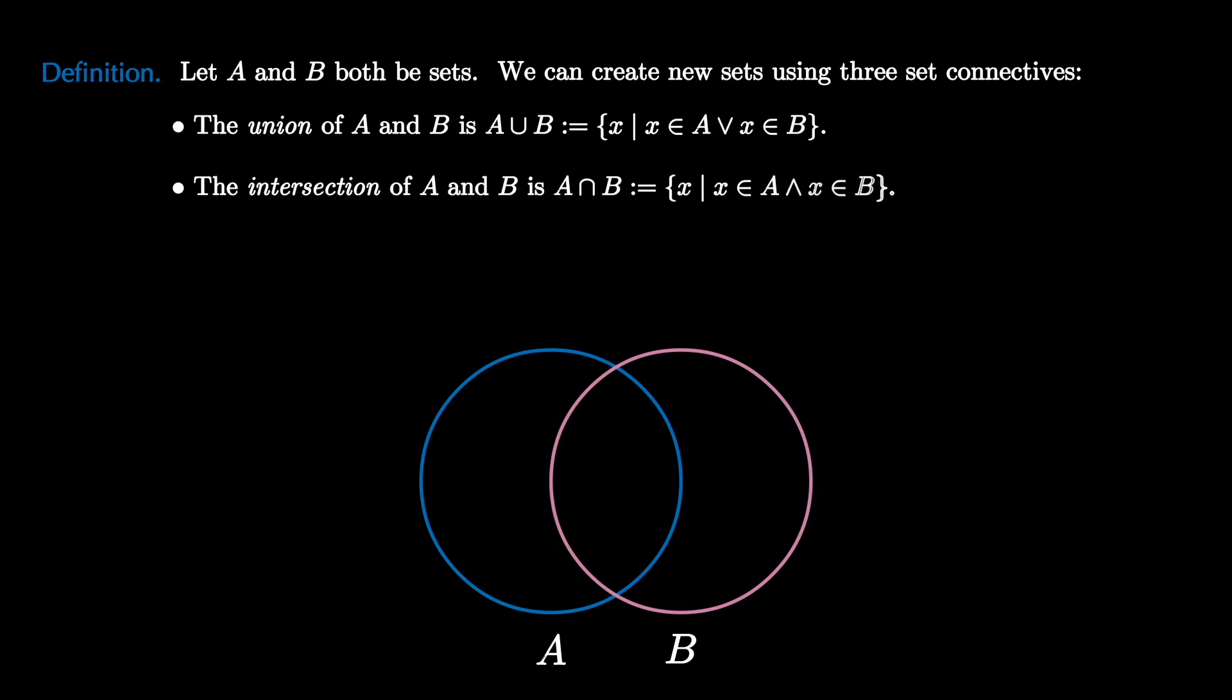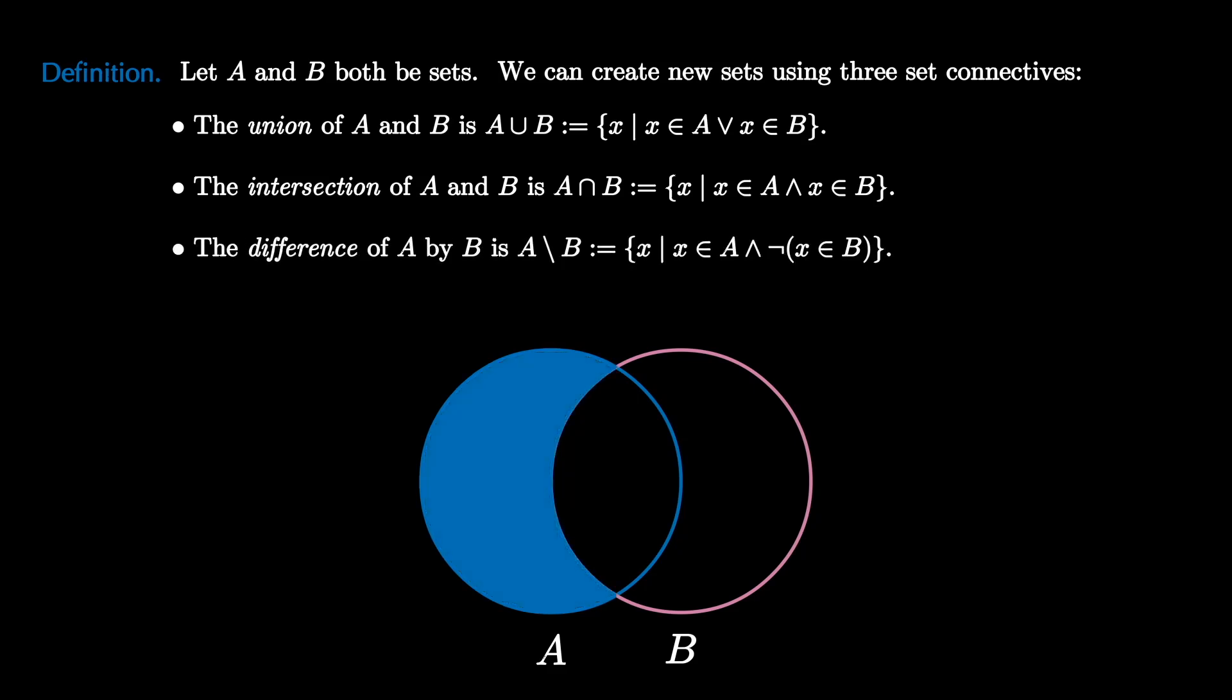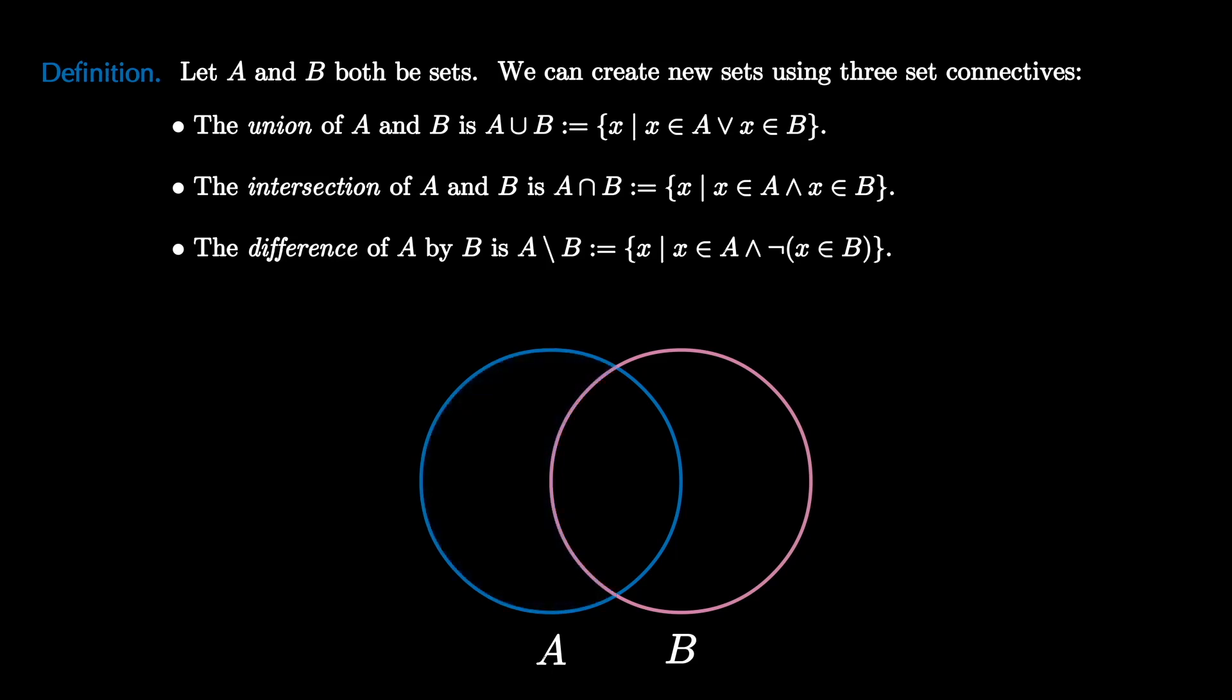Next is the intersection of A and B, denoted A intersect B. This is the collection of x such that x is in both A and B. This is the set theoretic interpretation of the AND statement. And the final elementary connective is the difference of A by B, denoted A set minus B, which is the collection of x that are in A and not in B, pictured on the left here. You can think of this as the collection of things that are only in A and not in B.